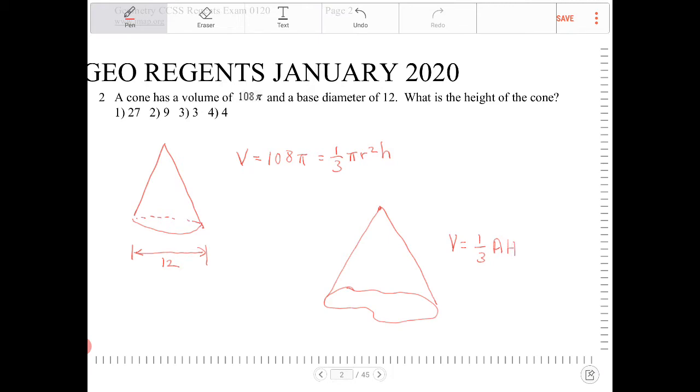And capital A here is the area of this base. And the height is the distance between the point to the base.